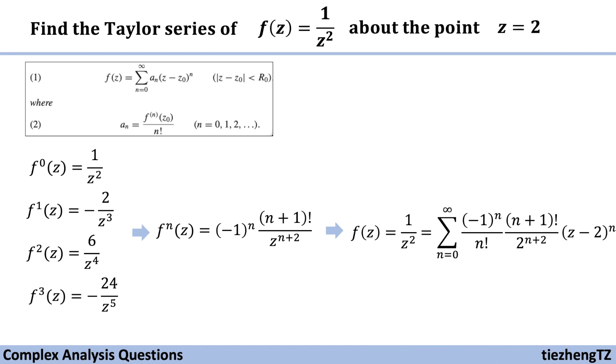Which becomes 1/z² equals sum, n starts from 0 to infinity, (-1)ⁿ over n! times (n+1)! over 2^(n+2), and then times (z-2)ⁿ.